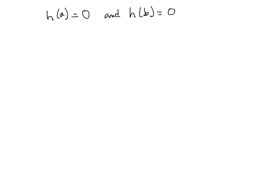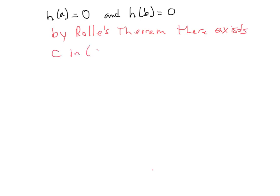We have h(a) = 0 and h(b) = 0, and we know h(x) fulfills the other requirements of Rolle's Theorem. So by Rolle's Theorem, there exists a point c in the open interval (a, b) where h'(c) = 0. We've shown by Rolle's Theorem that there's a point c in (a, b) where h'(c) equals zero.